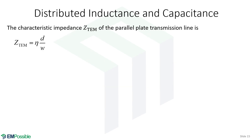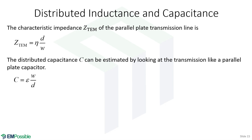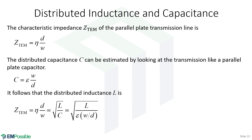We can also find expressions for the distributed inductance and capacitance. We already derived the characteristic impedance. If we look at this as a parallel plate capacitor, we can borrow from electrostatics to write the distributed capacitance. We also know the characteristic impedance equals the square root of distributed inductance L over distributed capacitance C. Since we now have an expression for C, we can set our impedance expression equal to that square root and solve for the distributed inductance L.